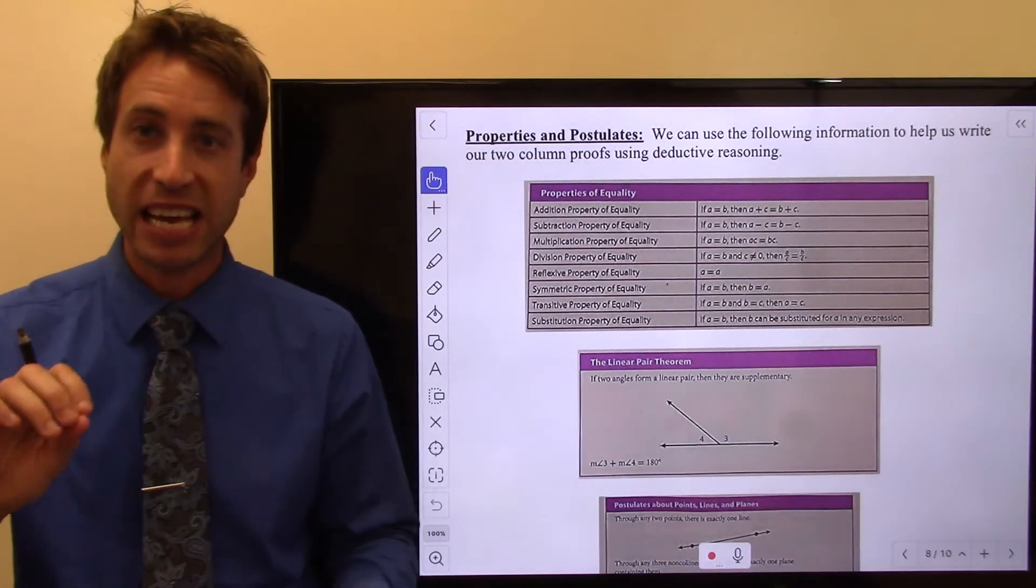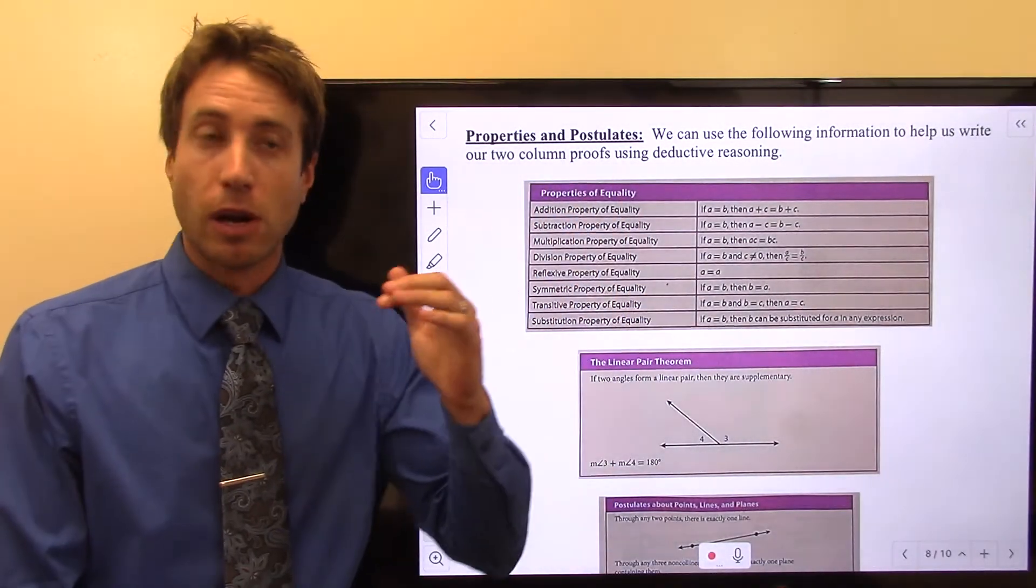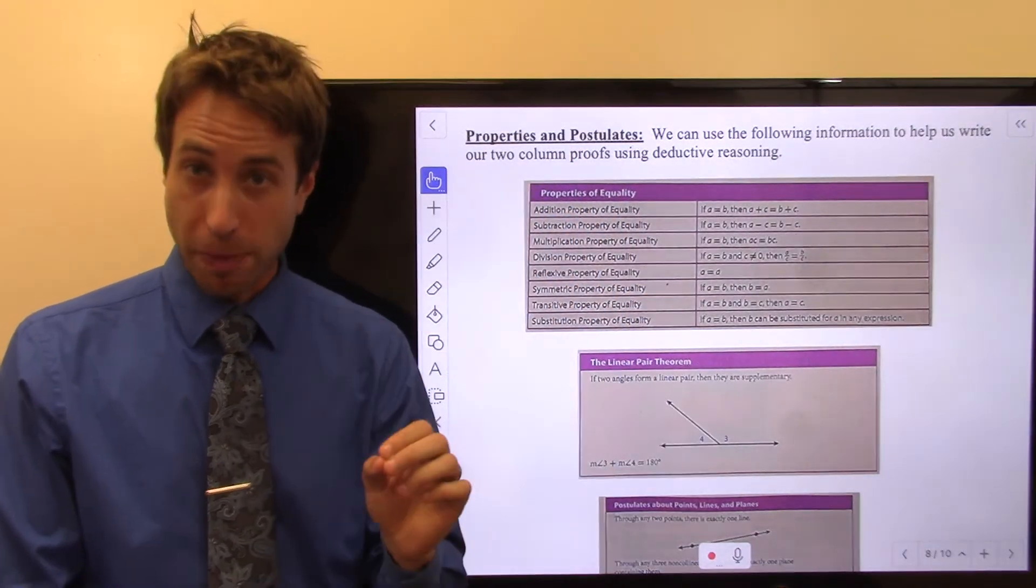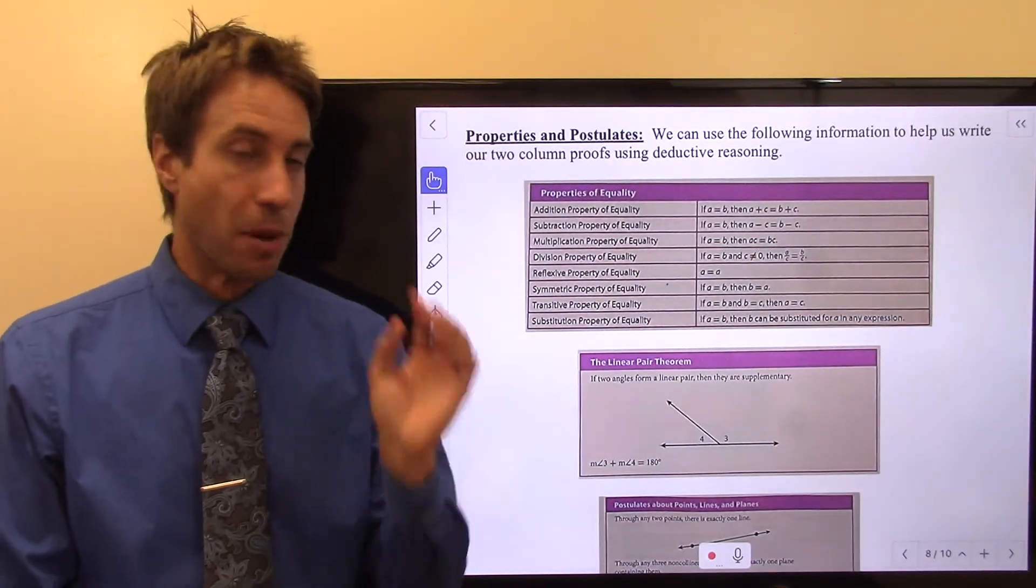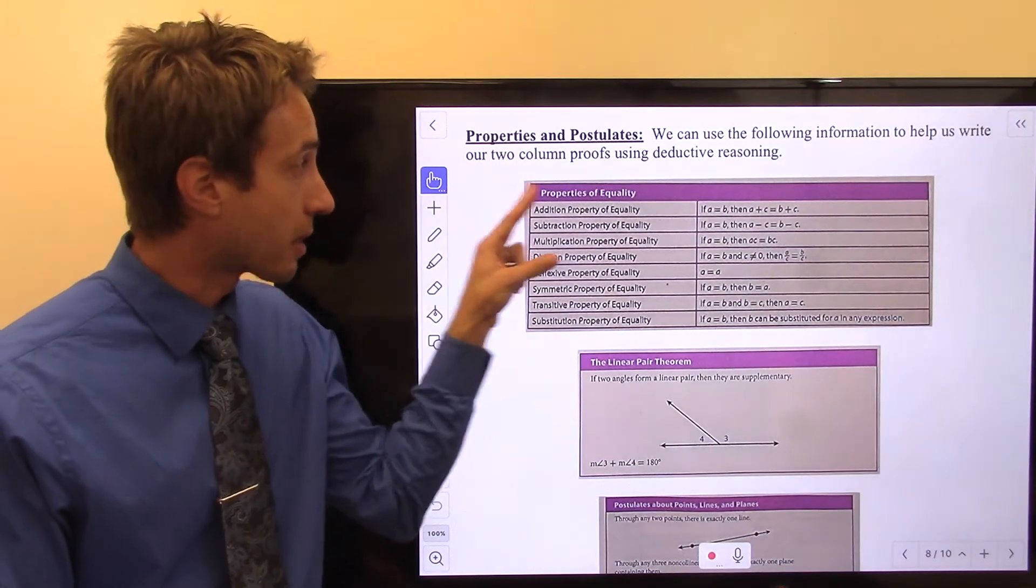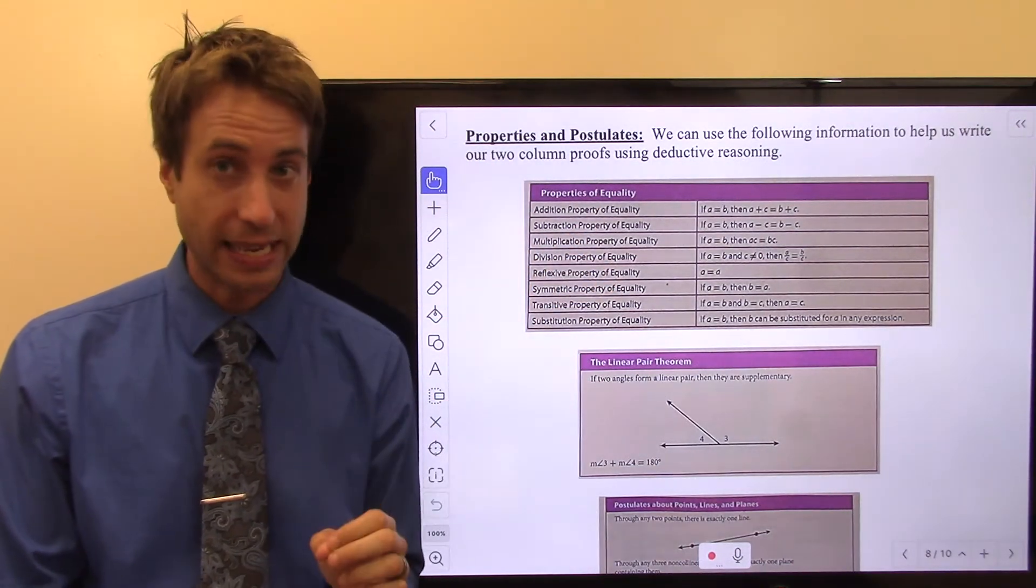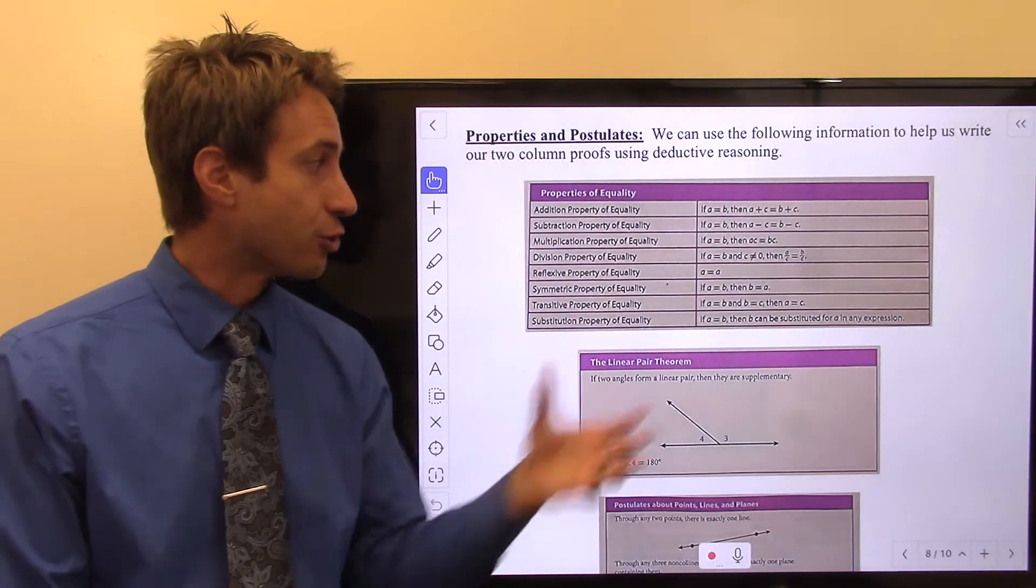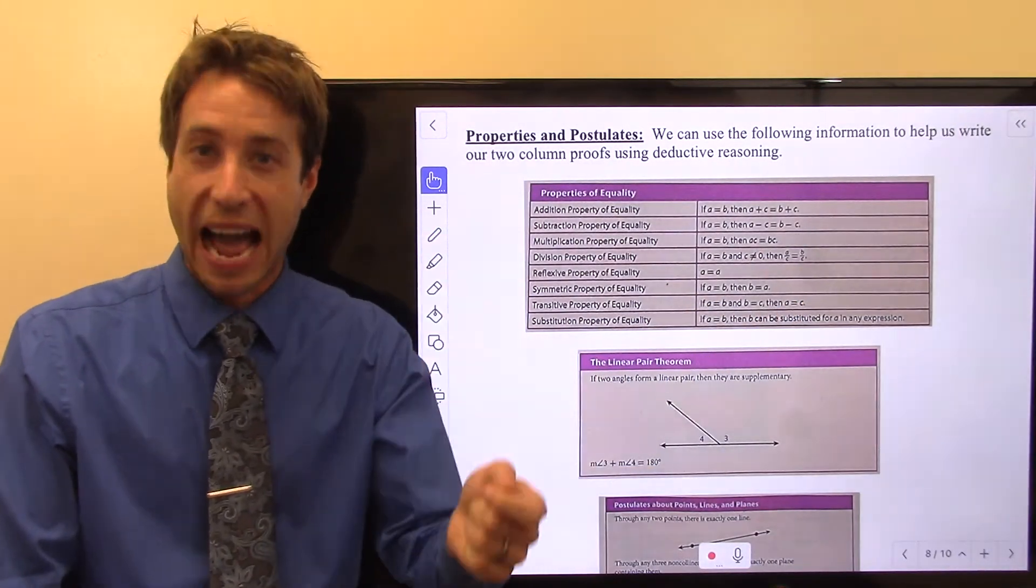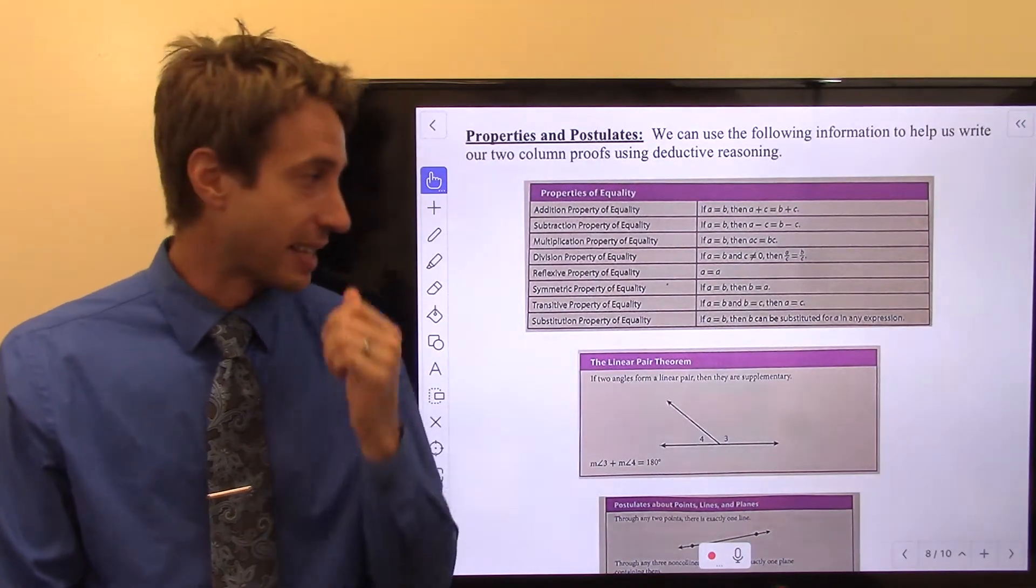Hi guys, welcome to this page of the notes and here's what we've got. I have some properties and postulates, most of which you are probably already familiar with from algebra. This top box, these properties of equality, are all properties of equality from algebra. You should recognize them from algebra one. I've just written them here in your notes so that you have them to reference when doing homework or quizzes or something like that.